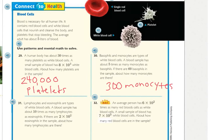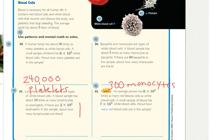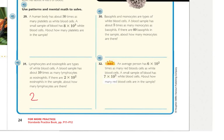Lymphocytes and eosinophils are types of white blood cells. A blood sample has about 10 times as many monocytes as eosinophils. If there are 2 times the 2nd power of 10 eosinophils in the same sample, how many monocytes are there? Well, 2 times 10 is 20, and then I'm multiplying by the 2nd power of 10, so I'm going to add 2 more zeros. So the answer is 2,000 lymphocytes.